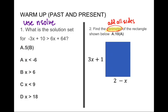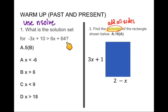For our warm-up, we're going to continue with our theme of past and present. Question number one asks: what is the solution set for negative 3x plus 10 is greater than 6x plus 64? You can certainly use nSolve — just remember that nSolve requires an equal sign. If you don't remember how, please ask for help.